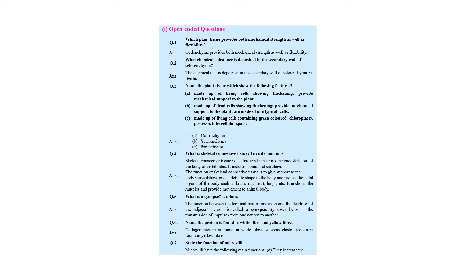What is a synapse? It is present in the neuron. The junction between the terminal part of one axon and the dendrites of the adjacent neuron is called a synapse. The name of the protein found in white fiber and yellow fiber: collagen is found in white fiber and elastin is found in yellow fiber, both part of connective tissue proper.